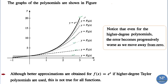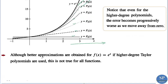Higher-degree polynomials approach the function e^x, but as we move away from 0 the error increases because e^x is exponential. Better approximations are obtained with higher-degree Taylor polynomials for e^x, but this is not true for all functions — there is no guarantee of better approximation with higher-degree polynomials in general.